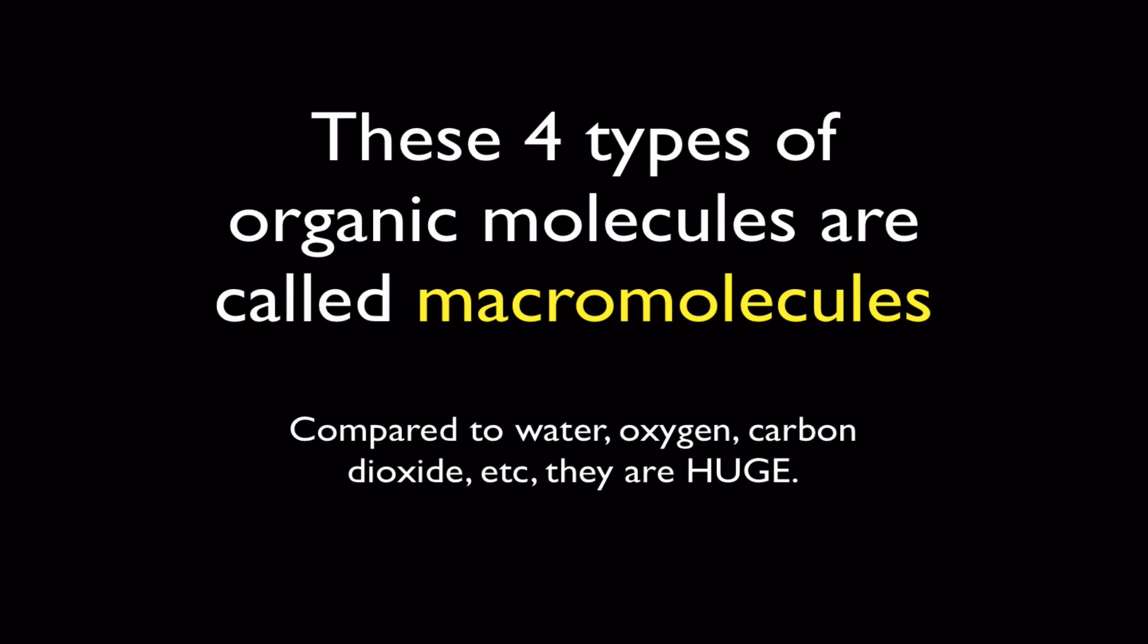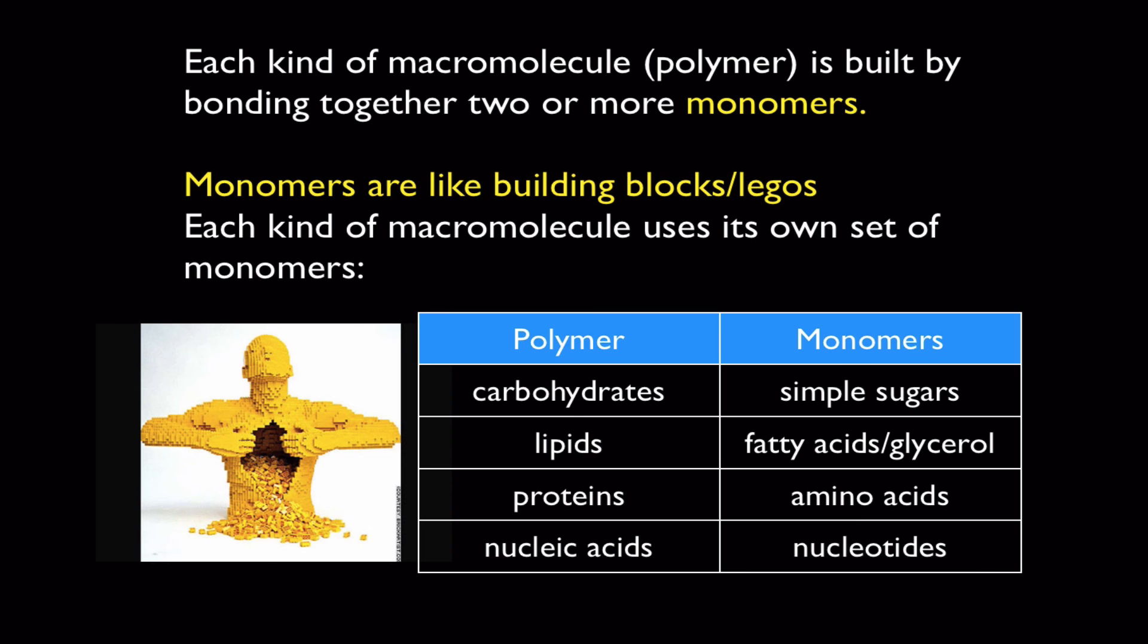These macromolecules are absolutely critical to the structure and function of living cells. And each of these macromolecules, or polymers, are built from their own specific monomer. Monomers are like building blocks. You can think of them as being like Legos. And each macromolecule uses its own set of monomers. So, if you want to build carbohydrates, you have to use a monomer called simple sugars. If you want to build lipids, you've got to build monomers called fatty acids and glycerols. If you want to build proteins, you've got to hook together monomers called amino acids. And, finally, if you want to build nucleic acids, you have to bond together monomers called nucleotides.